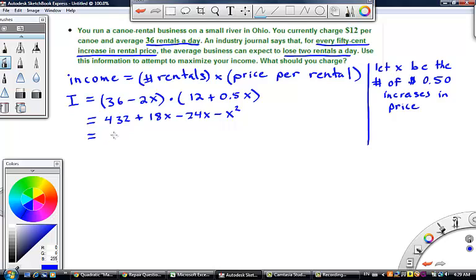If we gather like terms and write this in the proper order, put the minus x squared first, it would be minus x squared minus 6x plus 432.